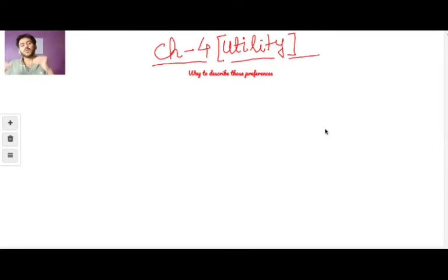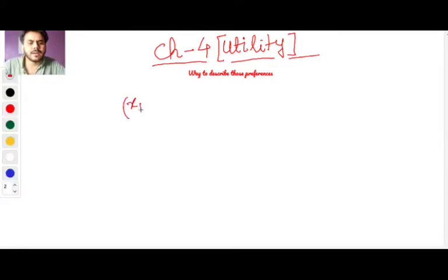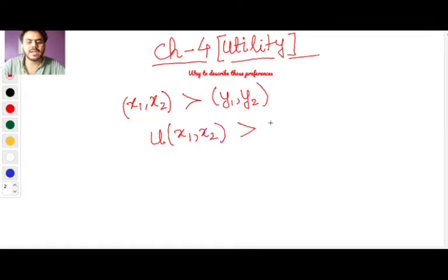Or in more mathematical terms, if x1, x2 is a bundle and we prefer it to y1, y2 bundle, it means that we can assign a higher number to this bundle. So, the utility function corresponding to this first bundle, x1, x2, has to be greater than the utility for the second bundle, y1, y2. Of course, x1, x2 are the goods in the consumption bundles, and similarly, y1, y2 are the goods in the consumption bundle.